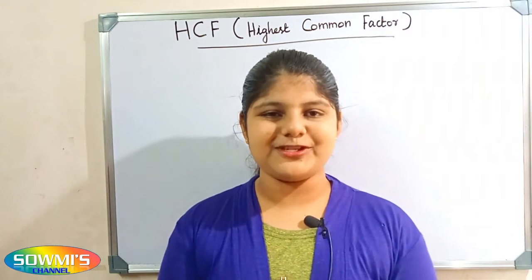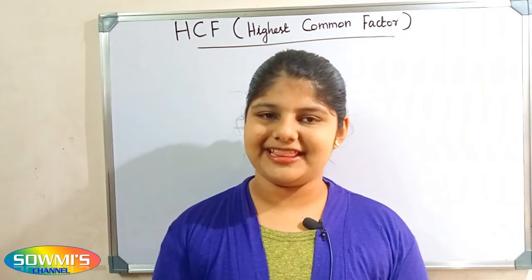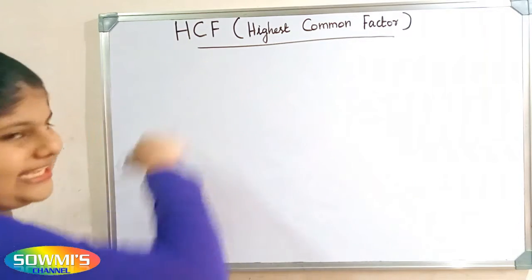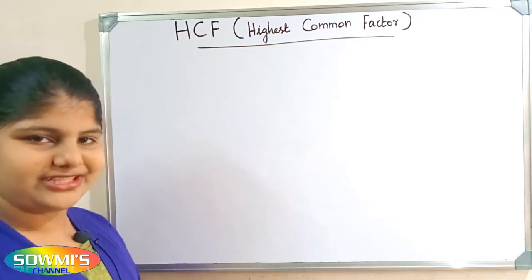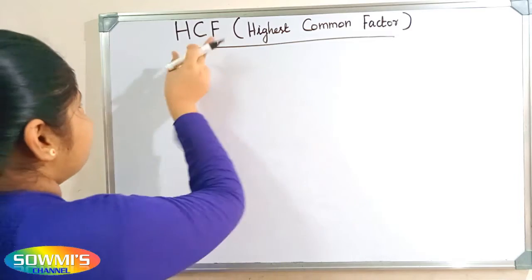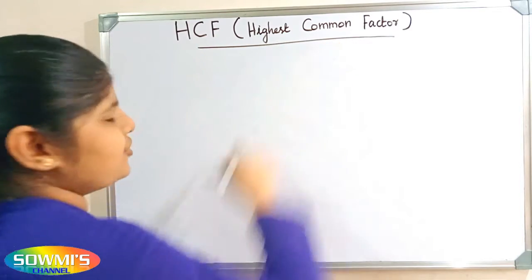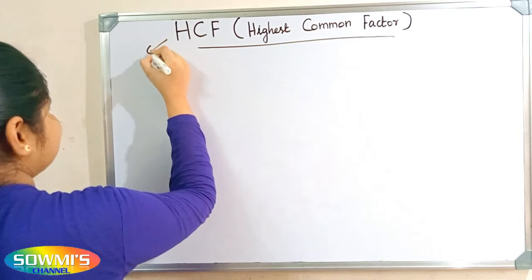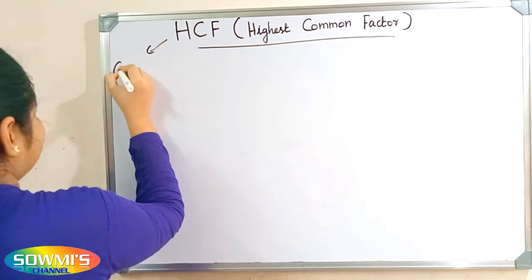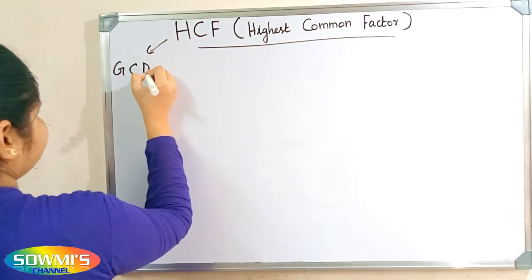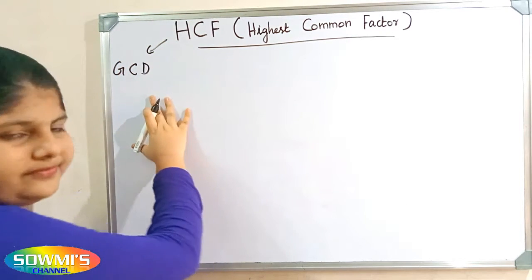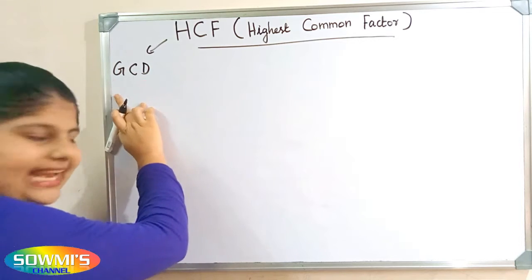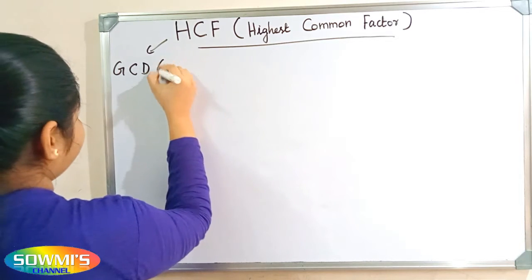Hi friends, welcome to Soami's channel. In this video I'm going to teach how to find HCF of two numbers using the long division method. HCF stands for Highest Common Factor and is also known as GCD, which stands for Greatest Common Divisor.